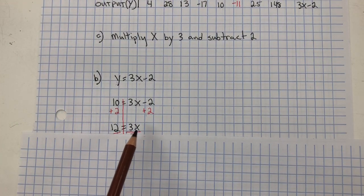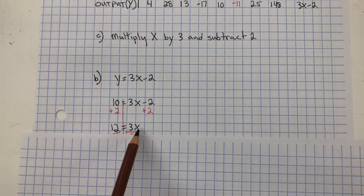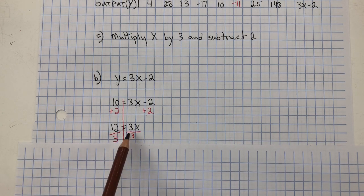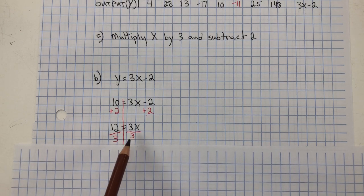So, now we have 12 equals 3X. Inverse property of multiplication, 3X is 3 times X, is division. We're going to divide both sides by 3 because we want that giant 1. Because 1 multiplied by X is X. That's the identity property of multiplication.